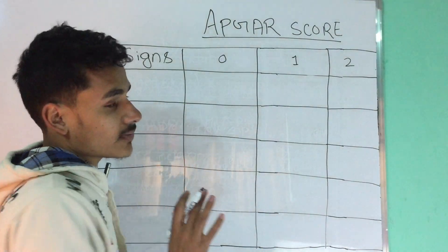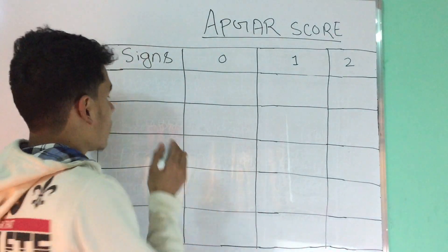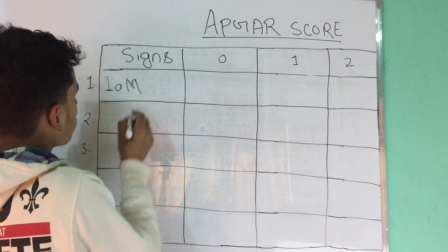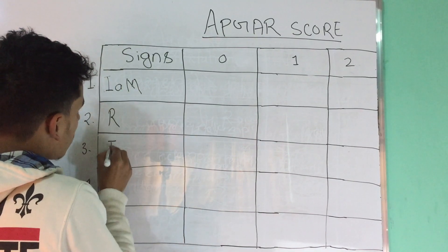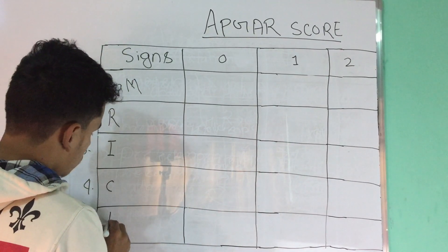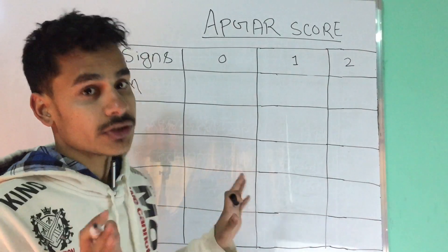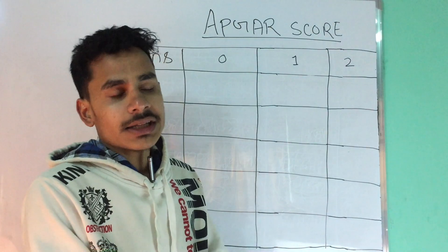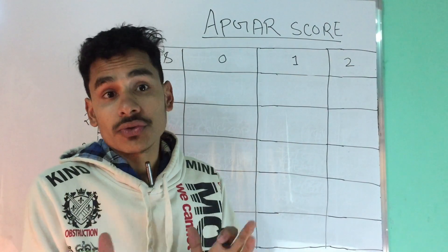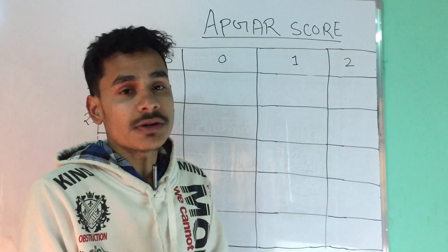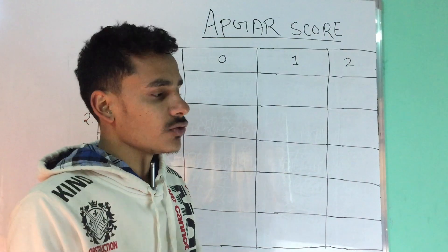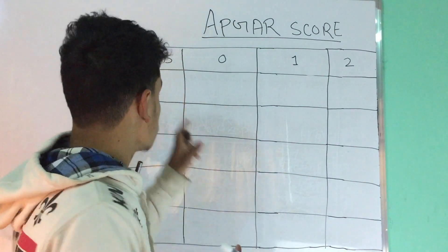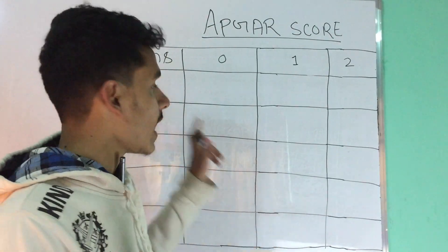I have a mnemonic for the five different signs. My mnemonic is 'I am RICH' — R-I-C-H. You are a very rich doctor because the baby has just been born and they have handed this newborn baby over to you. So imagine: I am RICH.